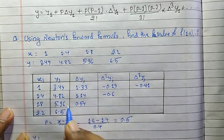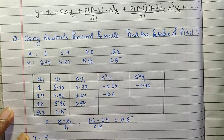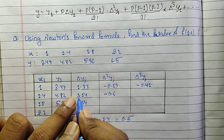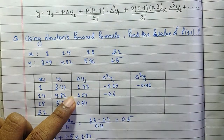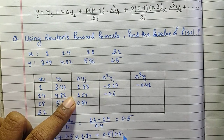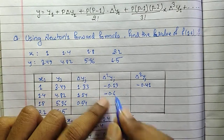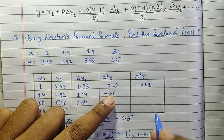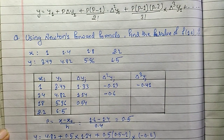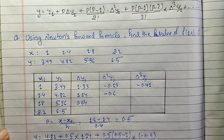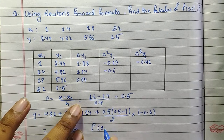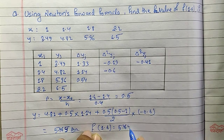Now we apply the formula. Since x0 is 1.4, our y1 is 4.82. So y equals 4.82 plus 0.5 times delta y1 (which is 1.14), plus 0.5 times (0.5 minus 1) divided by 2 factorial times delta squared y1 (which is minus 0.6). Since delta cubed y is 0, we do not need that term. Solving this gives us f(1.6) equals 5.46, which is our final answer.